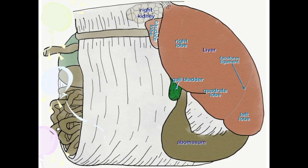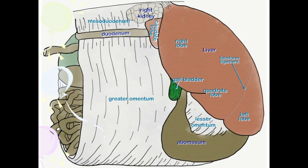Here is our abomasum. Coming off the lesser curvatures is the lesser omentum, which is going to be attaching to the liver and covering over the omasum. Here we have the descending duodenum with the mesoduodenum above and the greater omentum below. If we were to cut through that superficial leaf, we would enter into the omental bursa and see the deep leaf. Here we can see a little bit of cecum, a little bit of jejunum, and there's the descending colon. Most of this viscera is on the right side because the rumen is taking up the left side.